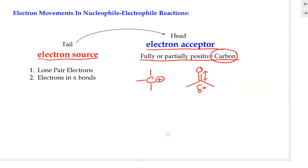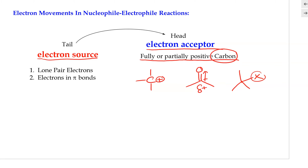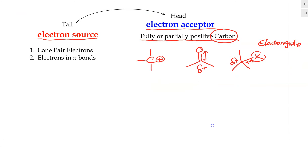In another example, if we have a carbon bonded to an electronegative atom — X here is an electronegative atom such as a halogen — this can also inductively pull electrons away from the carbon, making the carbon partially positive, which is also a good electron acceptor. Overall, an electron acceptor is referred to as the electrophile.